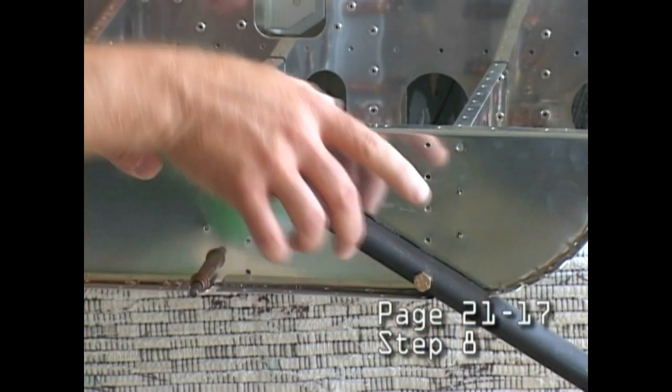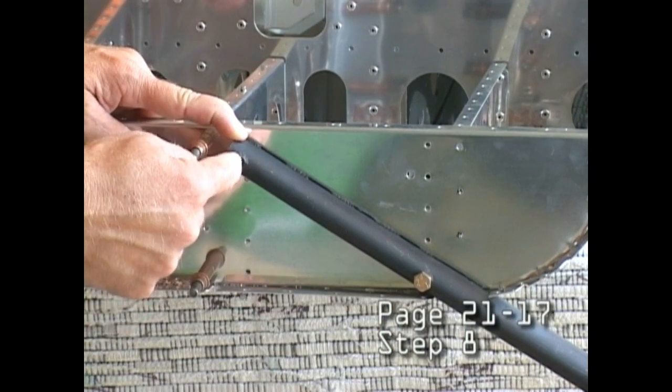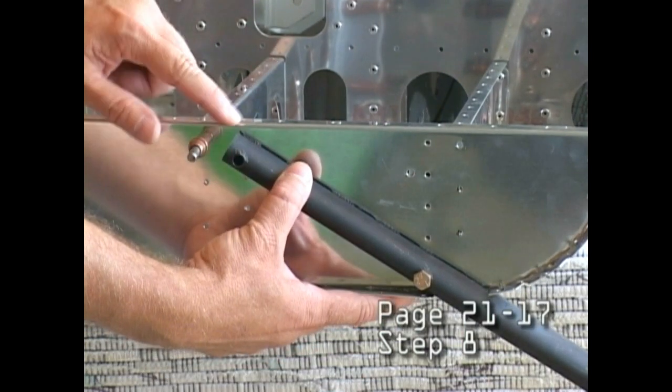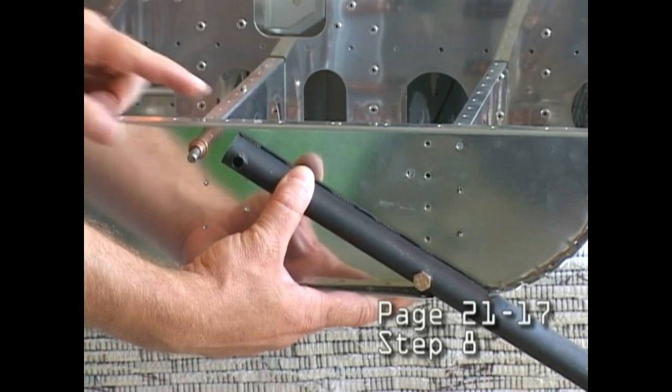Once we locate this, we can clamp it in place and then match drill the quarter-inch hole through the bulkhead and our step angle in the back.